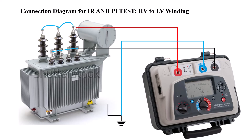For the HV to LV configuration, the positive red lead is connected to the high voltage winding with all three phases shorted together. The negative black lead is connected to the low voltage winding, also with all three phases shorted. The guard (blue wire) is connected to ground, so that the ground effect does not disturb the HV to LV test results. That is the purpose of the guard.